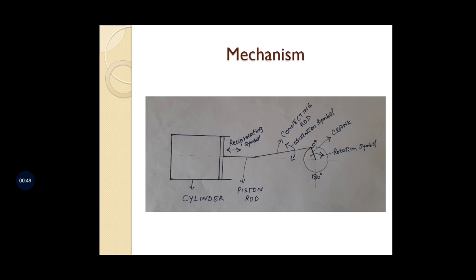Here we can see the cylinder is connected with a piston rod, the piston rod is connected to a connecting rod, and the connecting rod is connected to a crank. The piston reciprocates inside the cylinder. As the piston reciprocates, the connecting rod oscillates, and as the connecting rod oscillates, the crank rotates. This rotation causes the vehicle to move from one point to another.